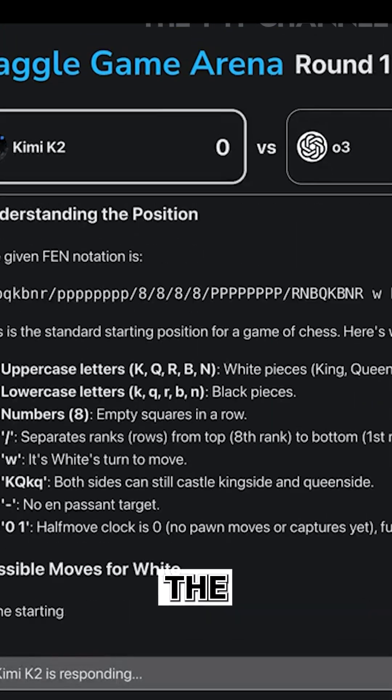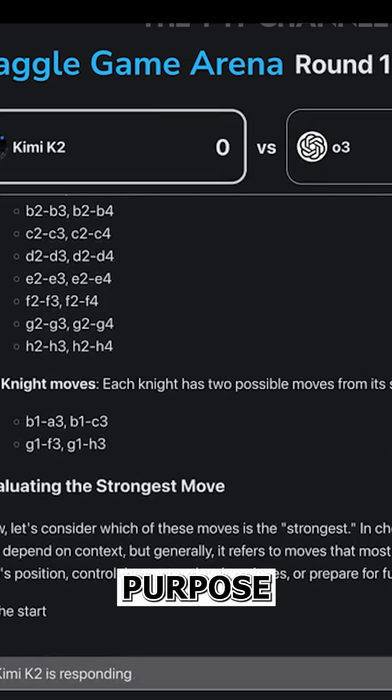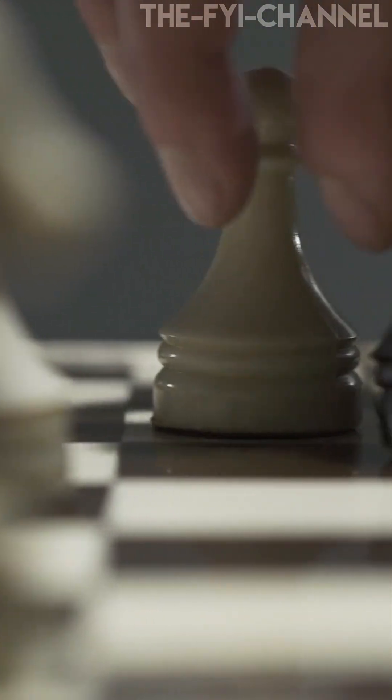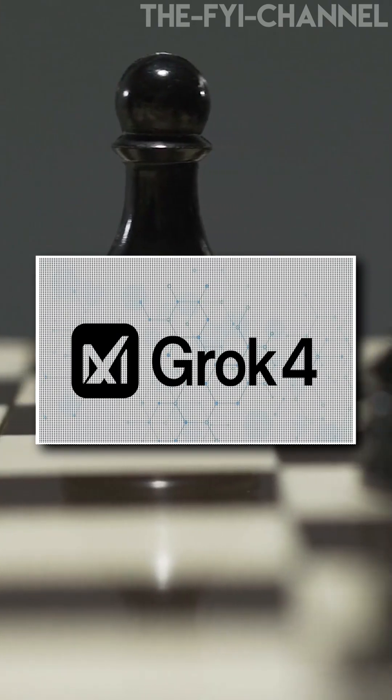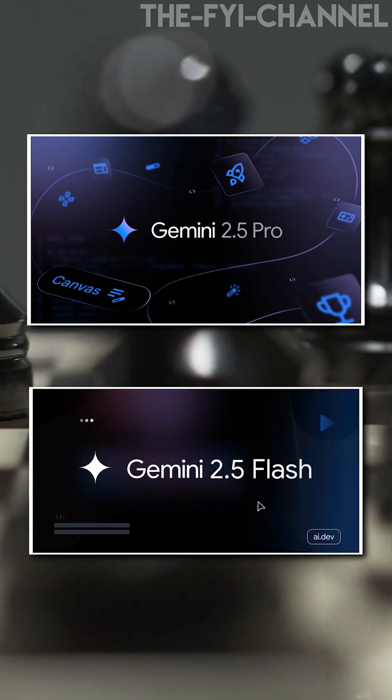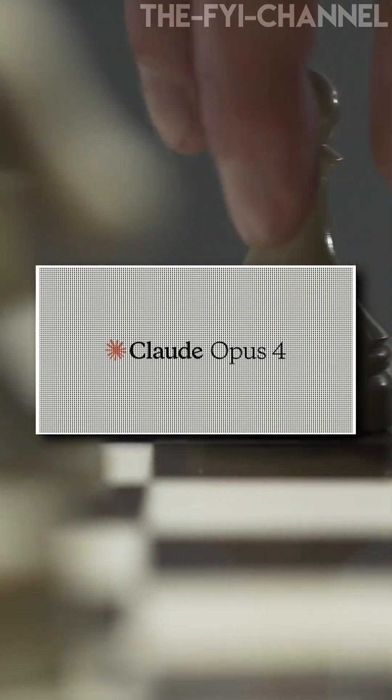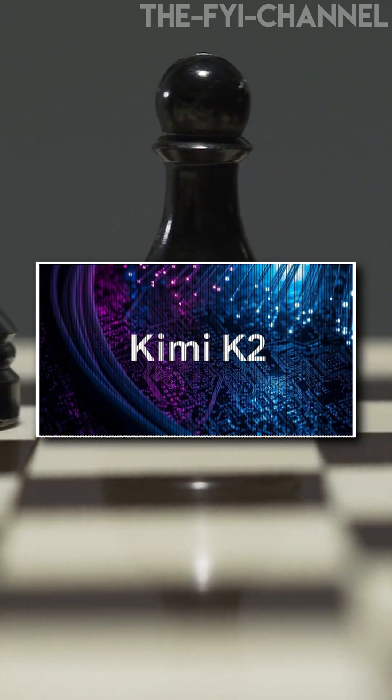Google's Kaggle Game Arena hosted the first-ever AI Chess Exhibition Tournament, featuring eight general-purpose AI models, not specialist chess engines. Here's who joined the chess battlefield: OpenAI's 03 and 04 Mini, XAI's Grok 4, Google's Gemini 2.5 Pro and Gemini 2.5 Flash, Anthropic's Claude 4 Opus, DeepSeek R1, and Moonshot AI's Kimi K2.